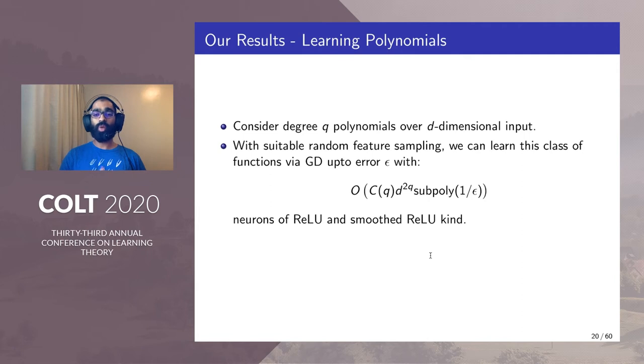Where subpoly means it can be made smaller than any fixed polynomial. So the neurons here are of the kind ReLU and smooth ReLU. These are the first subpolynomial learning bound for this problem in literature.